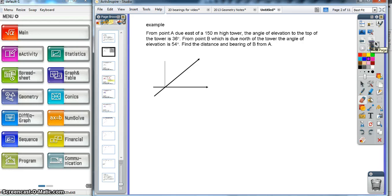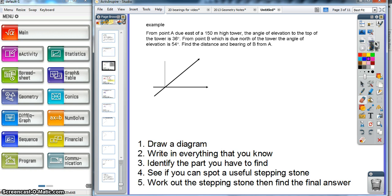Okay, so the question we're going to look at here: we have a point A due east of a 150 meter high tower, angle of elevation to the top 36 degrees. Point B which is due north has an angle of elevation of 54 degrees. Find the distance and the bearing of B from A. There's quite a lot going on in this question. We're going to use the same method.